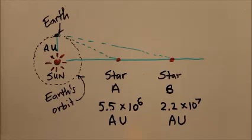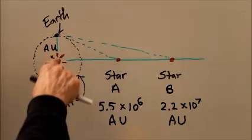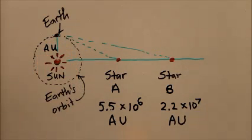Star A is 5.5 times 10 to the 6th astronomical units away from us. Remember, an astronomical unit is the distance between the Sun and the Earth, the average distance. So this is 5.5 times 10 to the 6th times that distance.